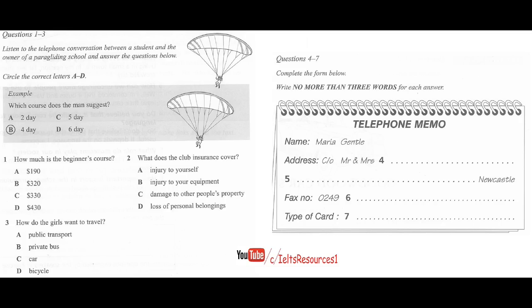Maria Gentle. And your address, Maria? Well, I'm a student staying with a family in Newcastle. So it's care of Mr and Mrs McDonald. Like the hamburgers? Yes, exactly. McDonald. The post office box address is probably best. It's P.O. Box 676 Newcastle. Is there a fax number there? Because I could fax you the information. Yes, actually there is. It's 0249, that's for Newcastle, and then 775431.